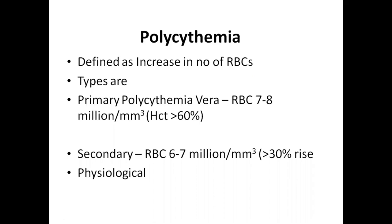Polycythemia can be of two types: primary or secondary. In primary polycythemia, the RBC count will be more than 7 to 8 million per cubic millimeter and the hematocrit will be more than 60%. It is mostly idiopathic. In secondary polycythemia, the RBC count will be more than 6 to 7 million per cubic millimeter and the hematocrit will be more than 30%. It is mostly physiological.